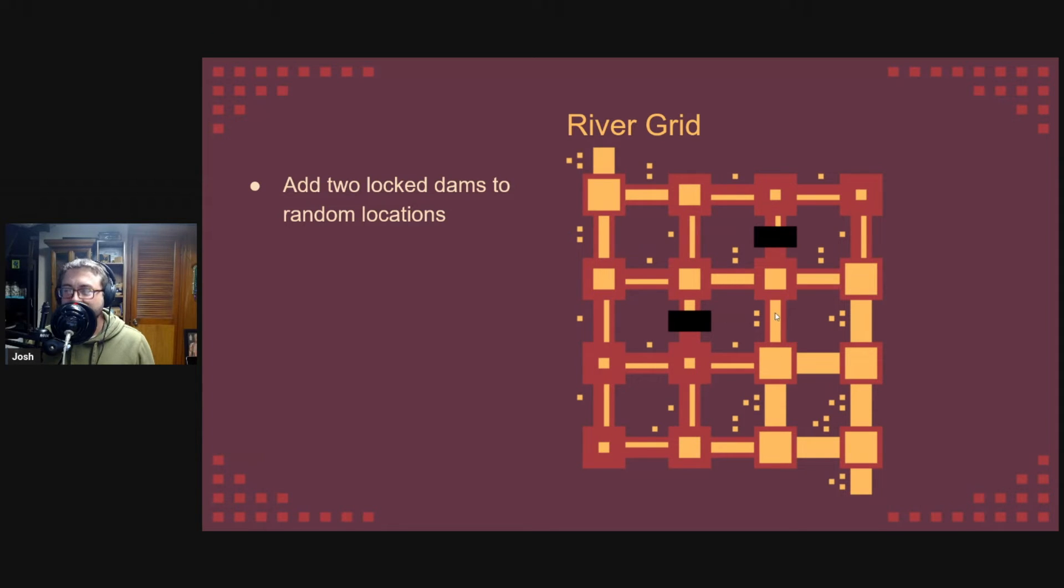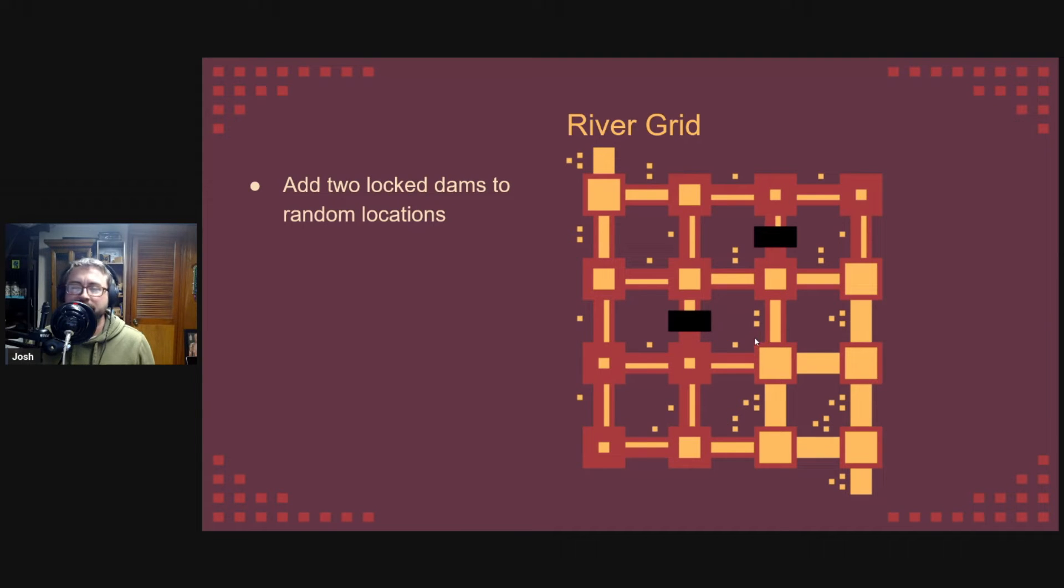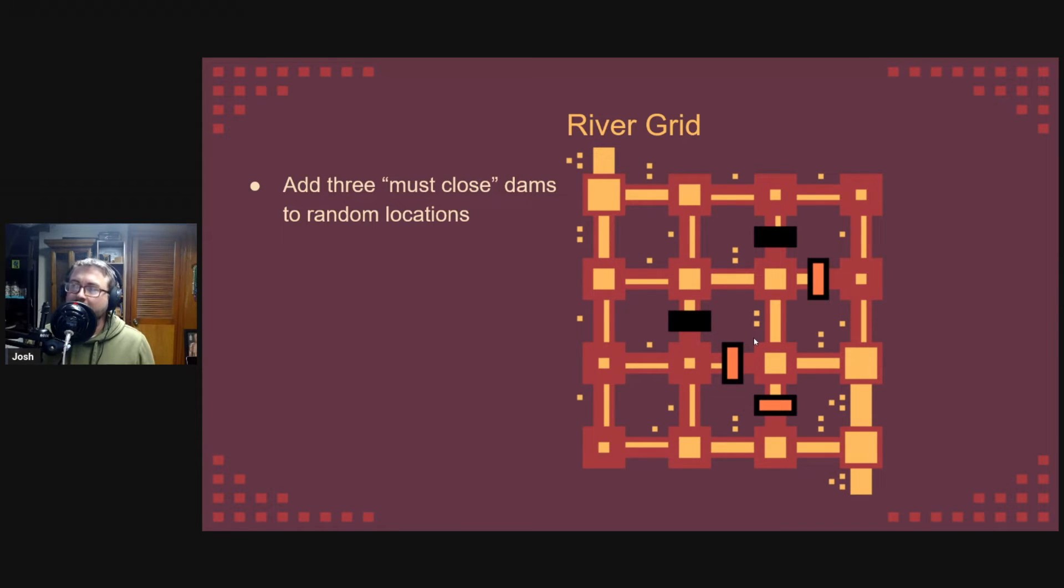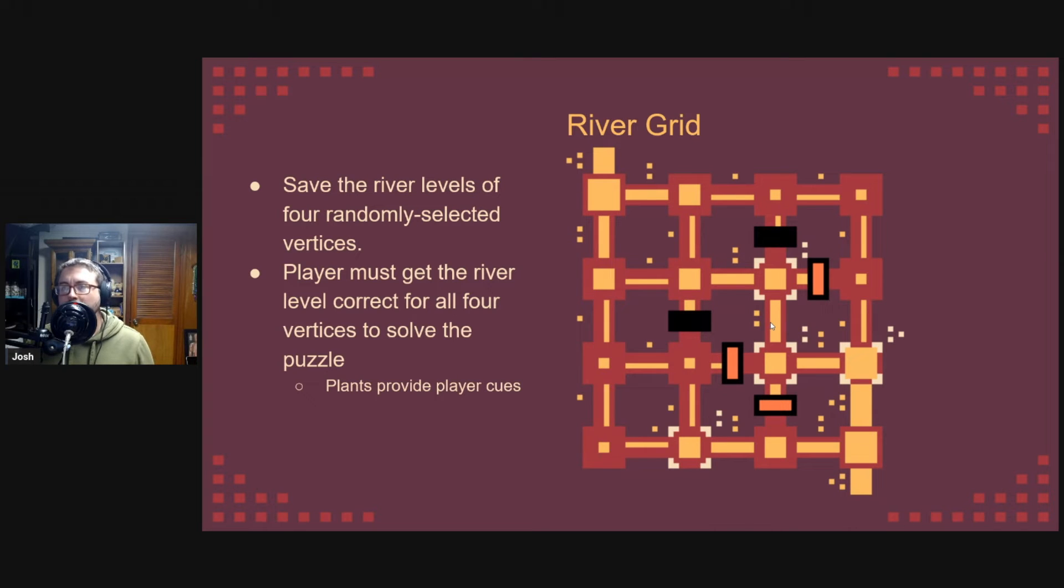First thing we do is we add two locked dams to random locations, and you can see how that changes the water levels behind those dams. Next, we add three more dams. These dams are must-close dams for the known solution that we are generating. They are toggleable by the player. Once we have these, we pick four vertices as the solution vertices. We note the level of water in each of these four vertices, and the player must toggle switches until they get all four of these with the correct water level.